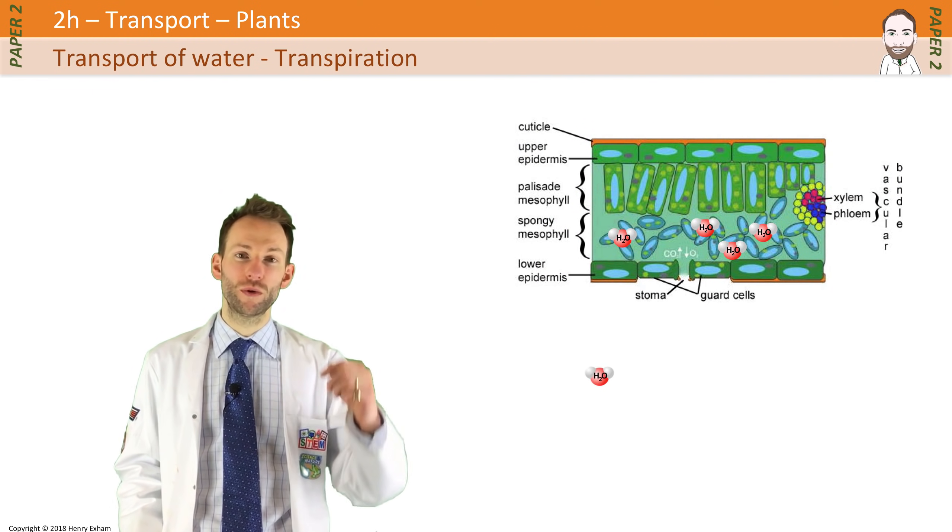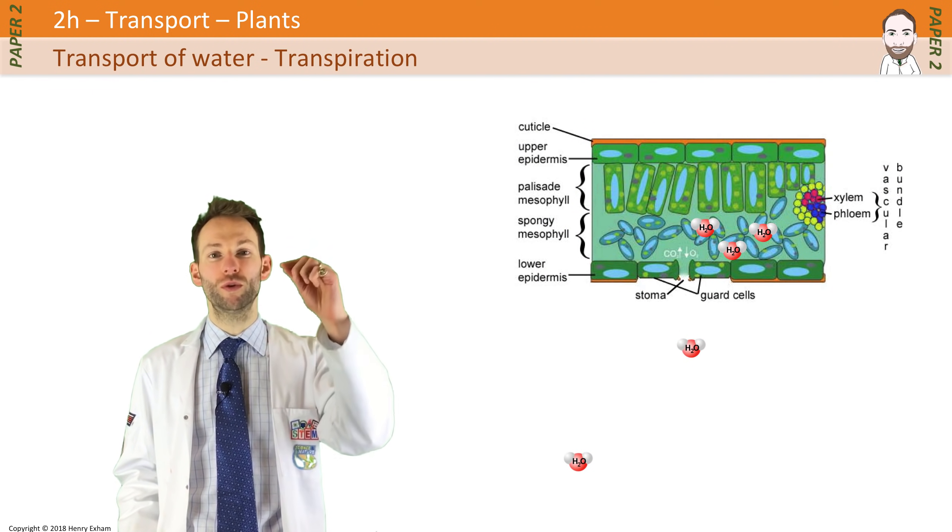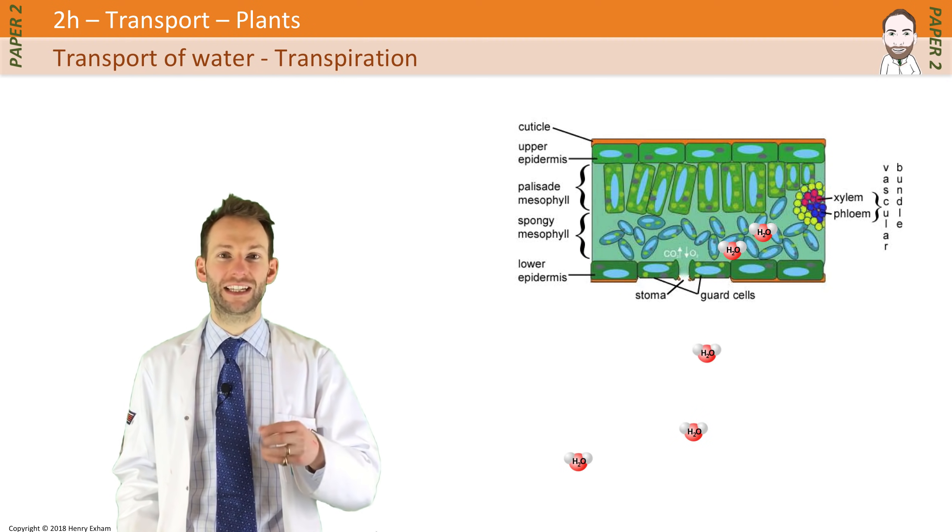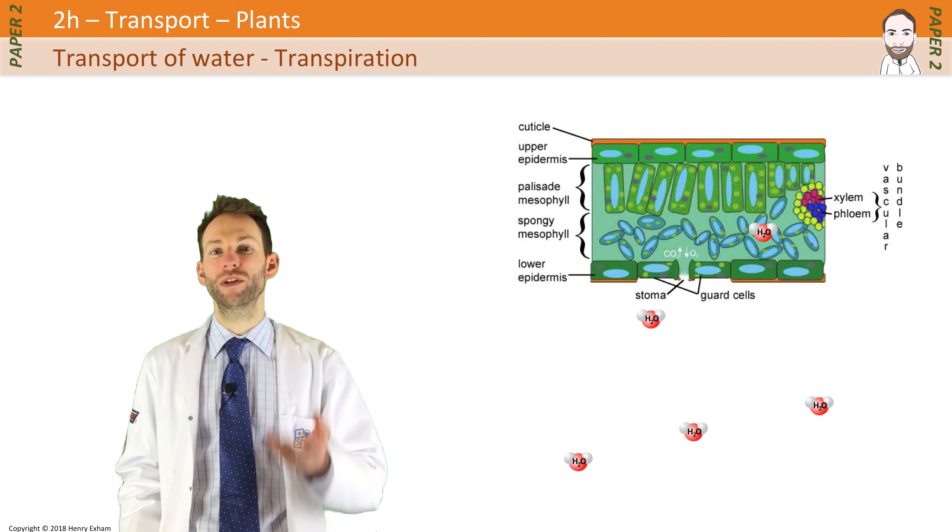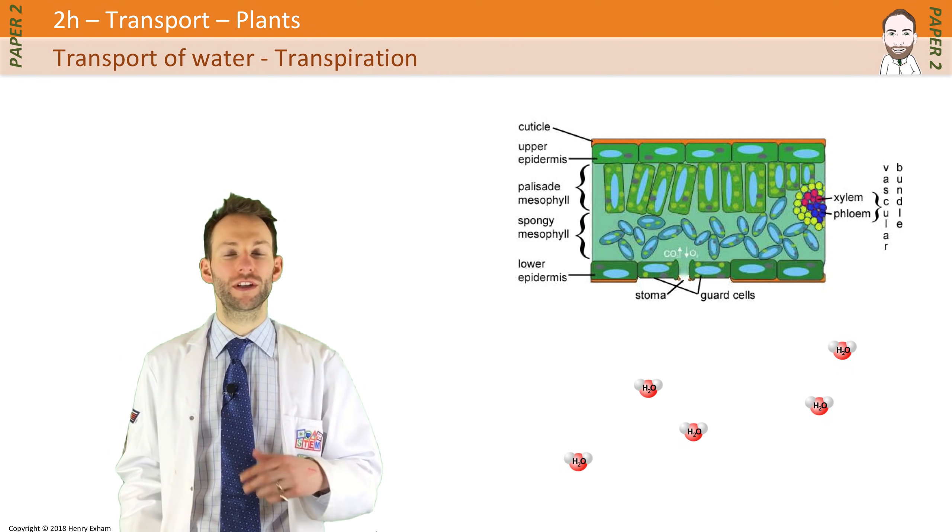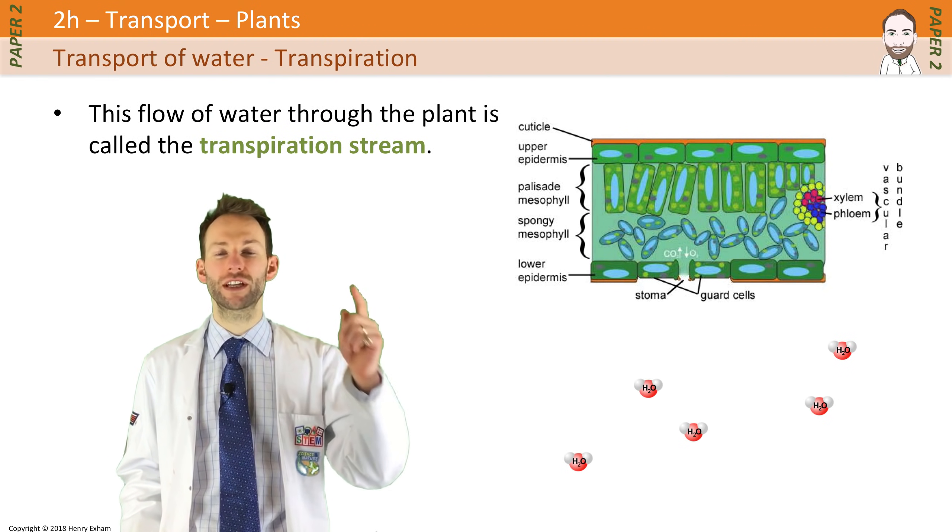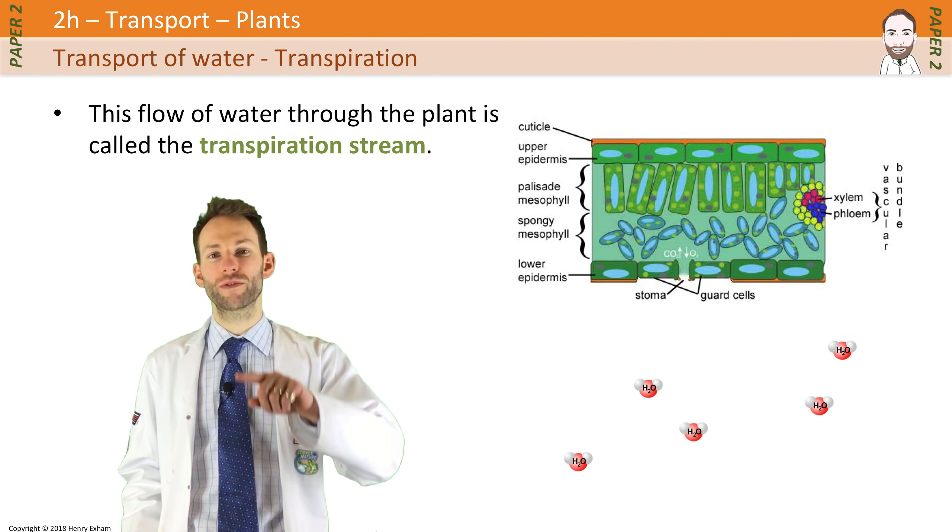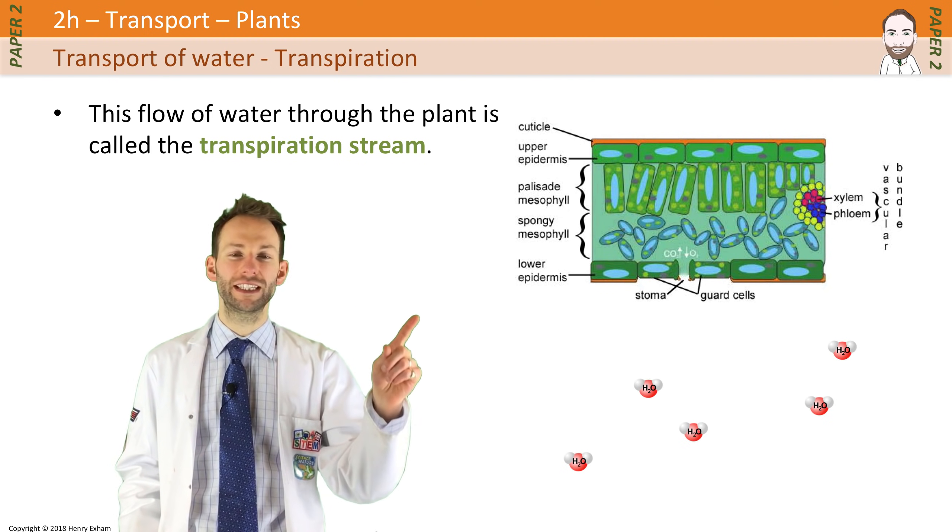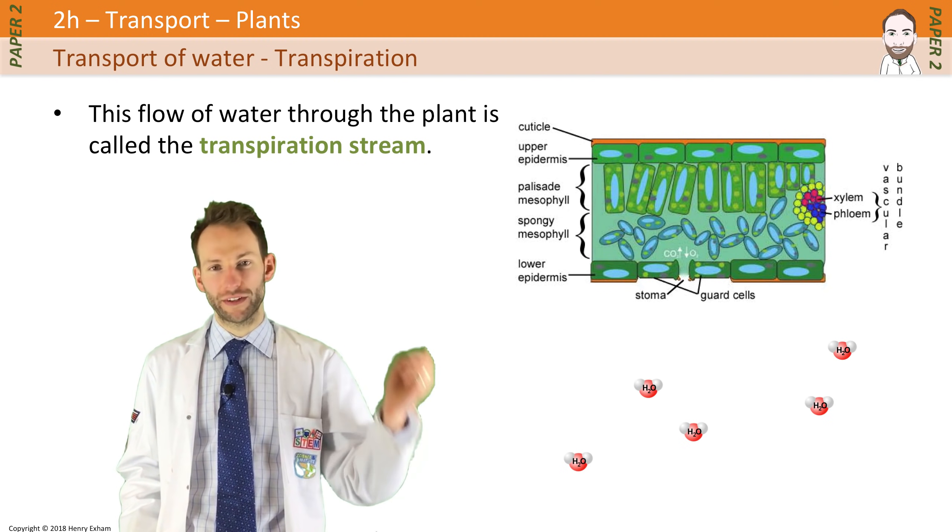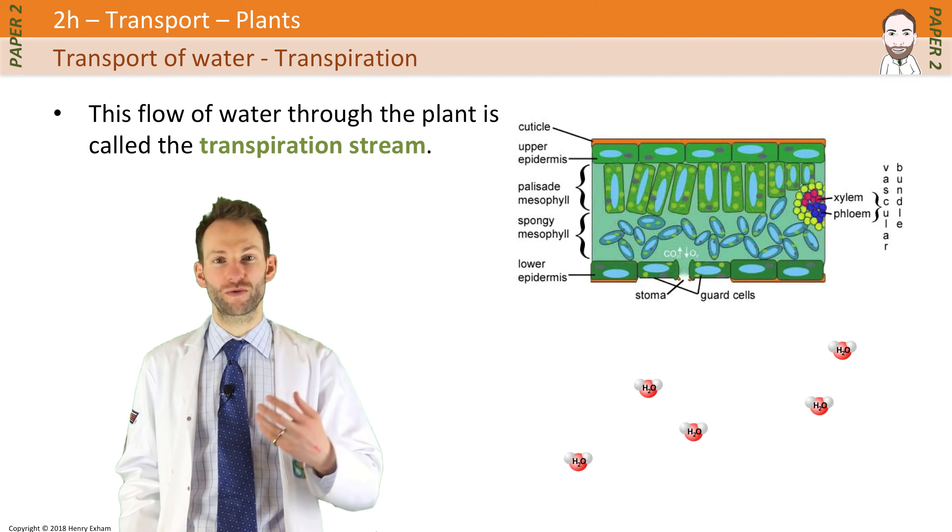But as it loses more water, the plant will draw more water up to replace that, and more minerals will travel up with that water in the xylem as well from the roots. We call this continuous process of water being drawn up through the xylem, lost out of the leaves as vapor, and then more being drawn up again, the transpiration stream.